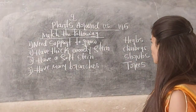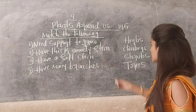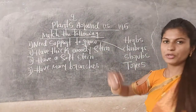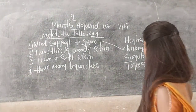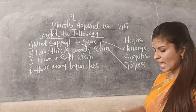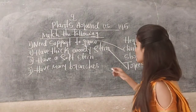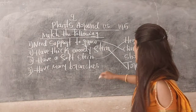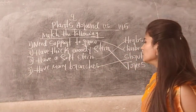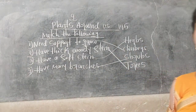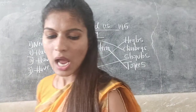The first one: 'Need support to grow' — the answer is Climbers. Climbers need support to grow. Next: 'Have a thick woody stem' — the answer is Trees. Trees have a thick woody stem. Next: 'Have a soft stem' — Shrubs have soft stems. And 'Have many branches' — those are called Shrubs. Shrubs have many branches. Write it in your textbook as well as in your notebook.